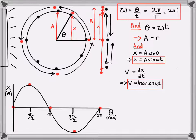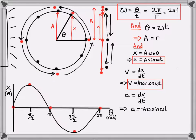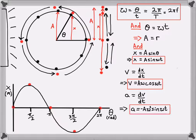The final thing to calculate is acceleration — the change in velocity with respect to time. Differentiating A omega cos of omega t: differentiating cosine gives minus sine of that angle, then differentiating the angle with respect to t gives another omega. So acceleration equals minus A omega squared sine of omega t.